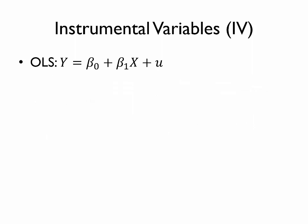Recall that we use instrumental variables when we have attempted to estimate an ordinary least squares OLS model where y depends on x, but we have a concern that x is endogenous. For example, in a recent video we asked how the demand for cars may have been affected by the price of cars, but we noted that the price of a car is endogenous because price is determined by both the supply and the demand function. That means that the OLS estimate of the beta 1 coefficient may be biased, meaning that we don't know whether we are estimating the causal impact of car price on car demand or whether we're confounding that with some other factor.